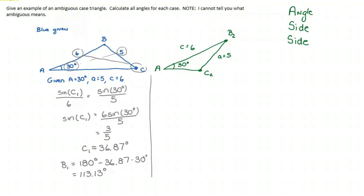The rule we apply is that C₂ is going to equal 180° minus C₁. So that means C₂ is going to be approximately 180° minus 36.87°.